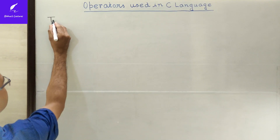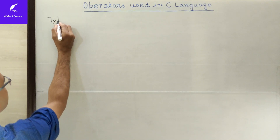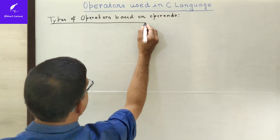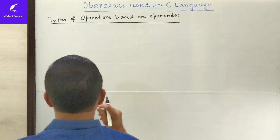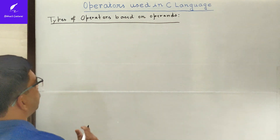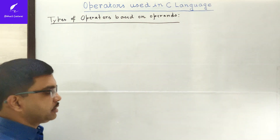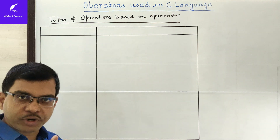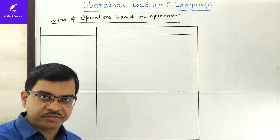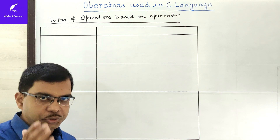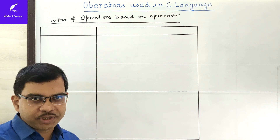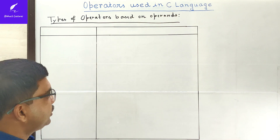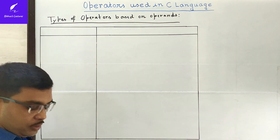So, types of operators based on operands — we will create a table for that. Based on operands, C operators can be broadly classified into three different categories: unary operator, binary operator, and ternary operator. We are going to discuss each one of them one by one.